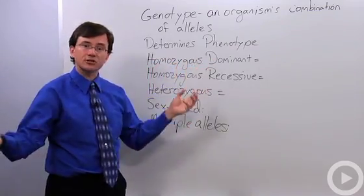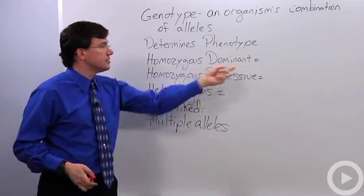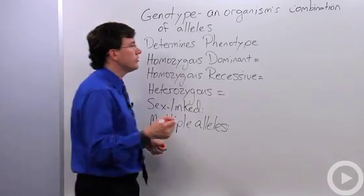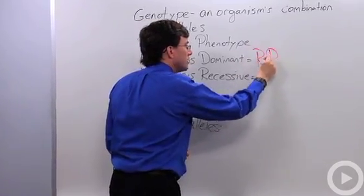Homozygous dominant means that the two alleles that came together in you are the same. Dominant means they're the dominant one. So if we use big R, for example the tongue rolling allele, we would write big R big R.